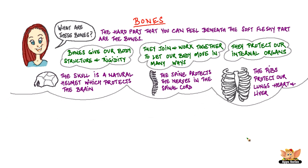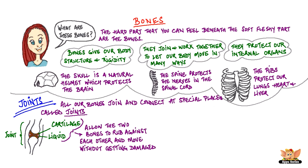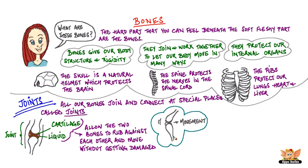Now we are going to learn about the skull, spine, ribs and other bones. Let's first talk about the parts in the skeleton that make movement possible. These parts or areas are called joints. All our bones join and connect at special places called joints. There is a special material called cartilage in the joints, and also some liquid between the two bones. The cartilage and this liquid allow the bones to rub against each other and move without getting damaged.